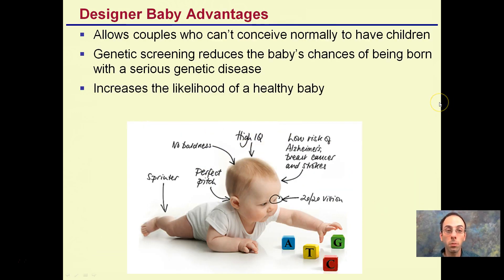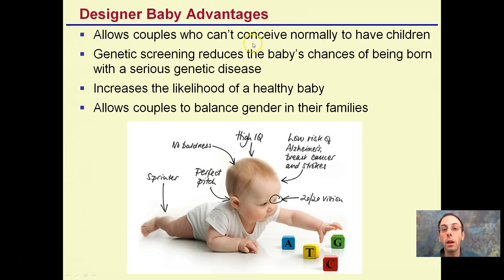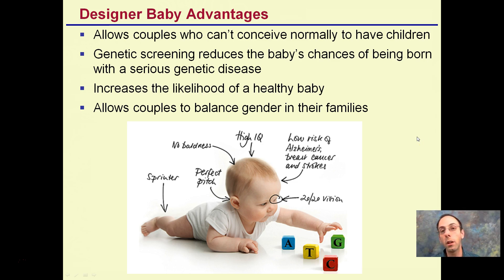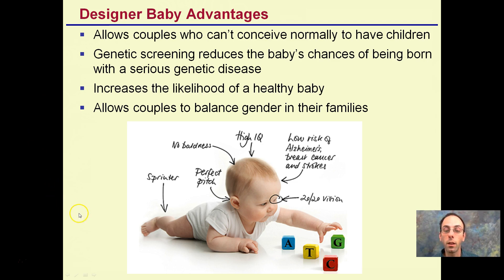The advantages of designer babies: it allows couples who can't conceive normally to have children. Genetic screening reduces the baby's chances of being born with serious genetic diseases and increases the likelihood of a healthy baby. It also allows couples to balance gender in their families. The fear, though, is that they may start selecting for vision, high IQ, no baldness, perfect pitch, and other traits. The letters this baby is playing with might give you some indication — DNA is the hint.